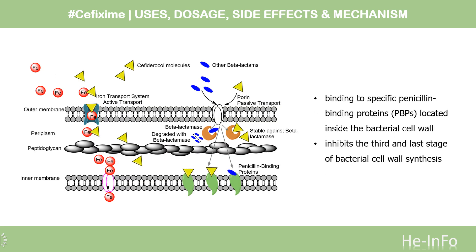Mechanism of Action. Like all beta-lactam antibiotics, Cefixime binds to specific penicillin-binding proteins (PBPs) located inside the bacterial cell wall, causing inhibition of the third and last stage of bacterial cell wall synthesis. Cell lysis is then mediated by bacterial cell wall autolytic enzymes such as autolysins. It is possible that Cefixime interferes with an autolysin inhibitor.